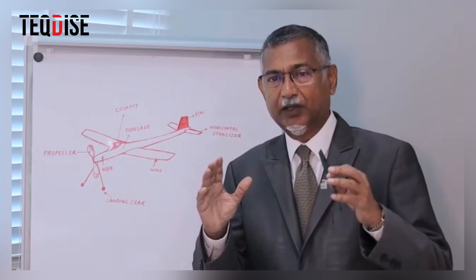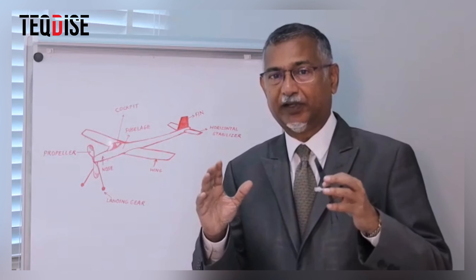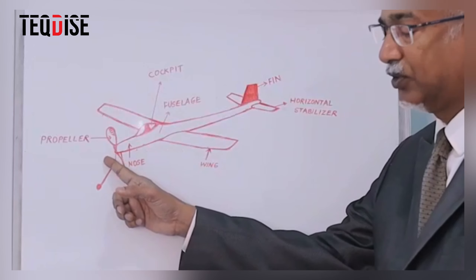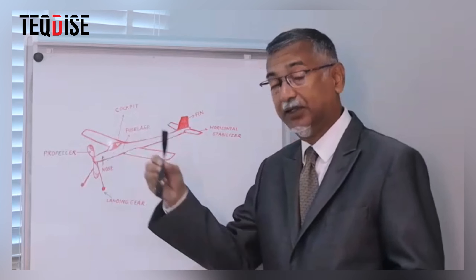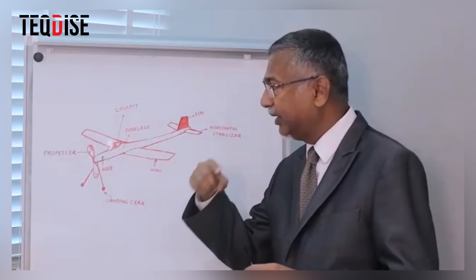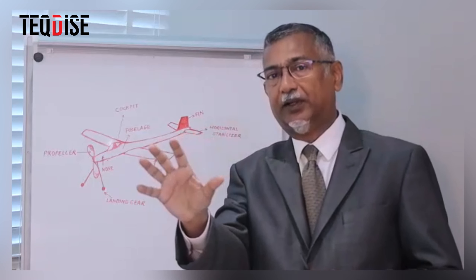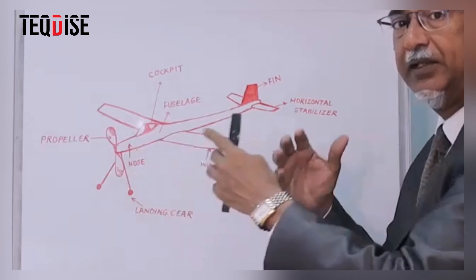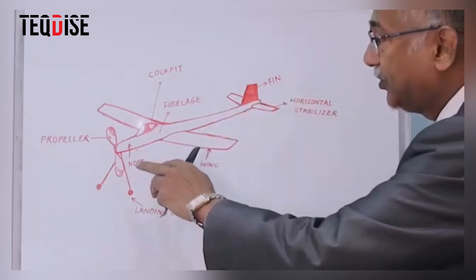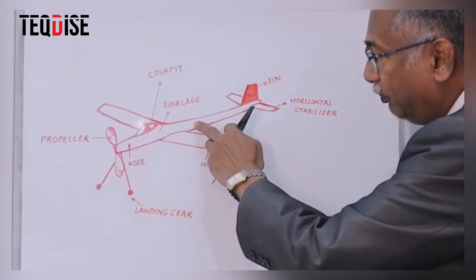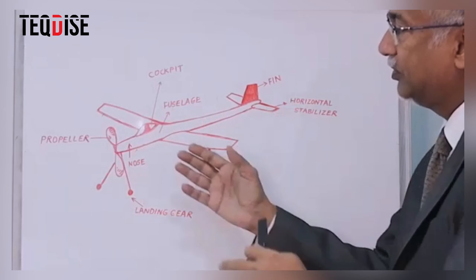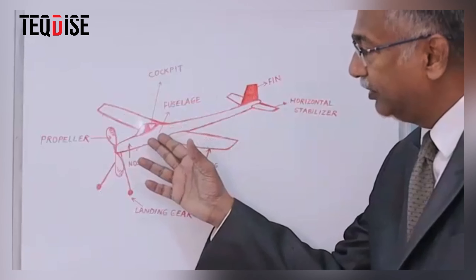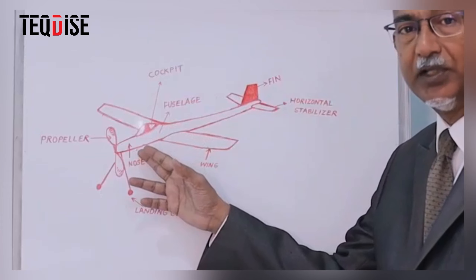I've drawn a model airplane on this whiteboard so you can make each aero model perfectly. The first part you see is right at the front, called the propeller. The propeller basically drives the plane forward. The propeller is attached to the engine, and the engine is attached to the long body of the aircraft, which is referred to as the fuselage.